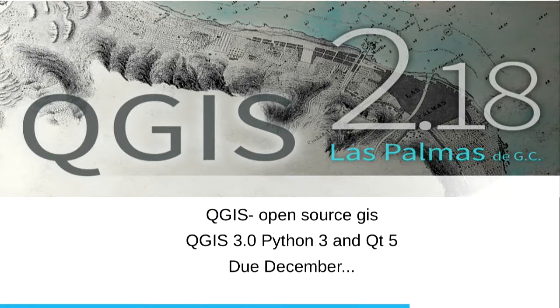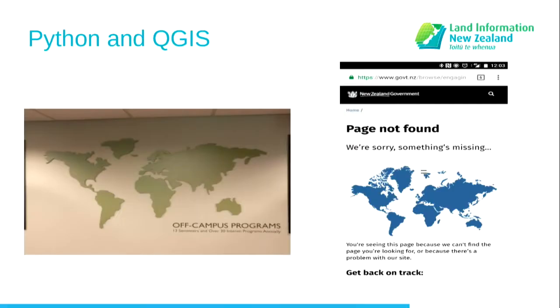QGIS itself — the long-term release at the moment is 2.18. It's got 30 core developers, 100 contributors. It's definitely extensible and powerful. It's moving to QGIS 3 shortly, which will have Python 3 and Qt 5. But if you're going to move to 3, wait for 3.2 because that's going to be the stable build. QGIS 3.0 will have bugs — it's more so they can get it out there and people can test it. And 3.2 will be next year.